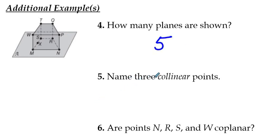Three collinear points, think about the definition of collinear. Collinear points are points that lie on the same line, so we have to figure out which set of three points lie on the same line. The only points that satisfy that condition are points M, X, and S. So M, X, and S are collinear points.